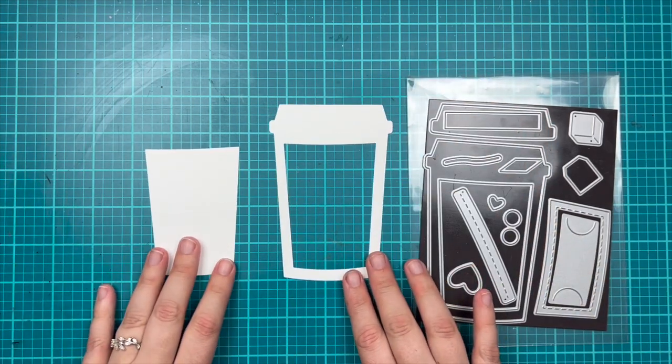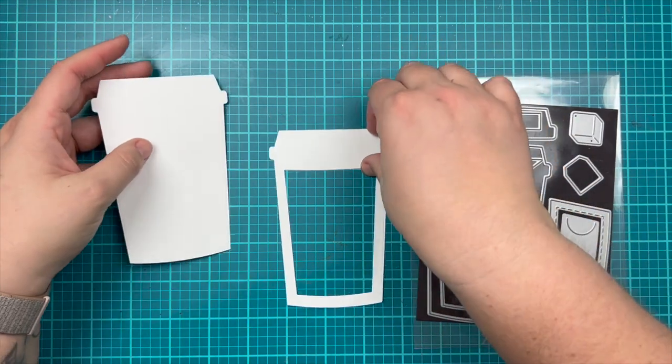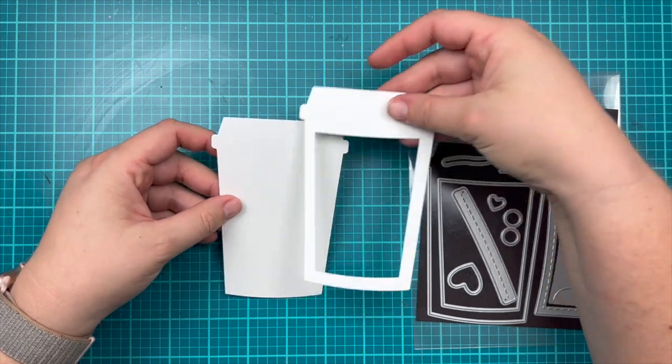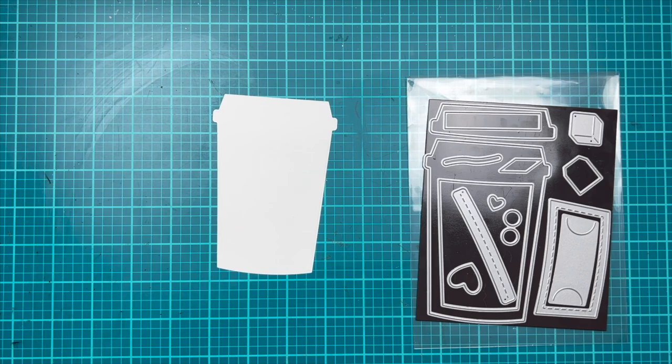Here you can see those pieces separated, and because it is cut out of the larger coffee cup, you can layer it to create a fun little coffee shaker. That's one way you can definitely use these dies.